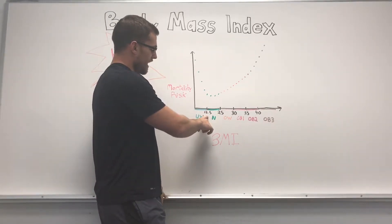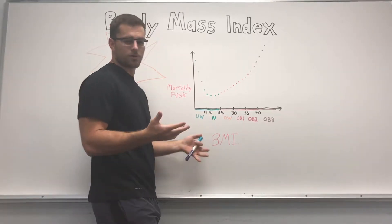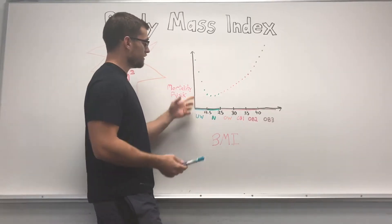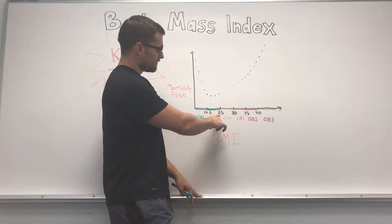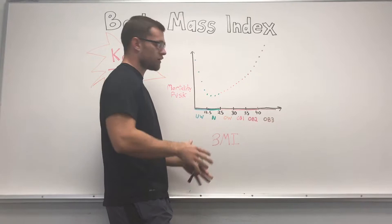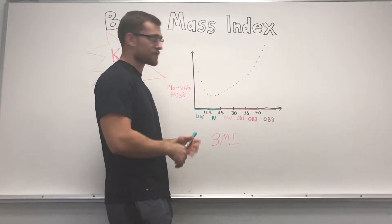With a BMI of 18.5 or under you are considered underweight, and with that there's a pretty high mortality risk. The normal range is 18.5 to 24.9, you're considered at the very lowest mortality risk.